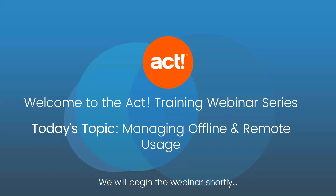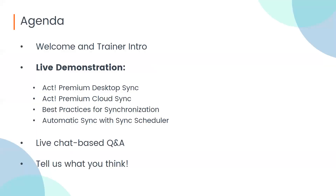So with all that said, let's look at our agenda. After a brief introduction, we'll get into a demonstration of synchronization. I'll show you ACT Premium Desktop synchronization, and then how to synchronize on an ACT Premium Cloud account. Then we'll cover best practices — when should you sync, when shouldn't you, what settings to use, which format is best, and how to set up the ACT scheduler for automatic syncs and reminders to remote users.